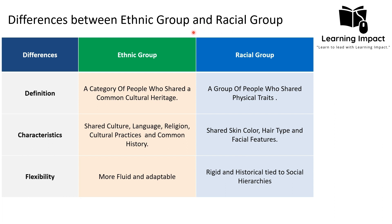The sub-branch of sociology which deals with the study of the political, social, and economic relations between the ethnic group and the racial group at all levels of society is called the sociology of race and ethnic relations. Let's discuss how different sociologists define these groups and what the main difference between them is.